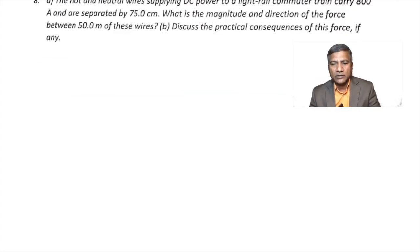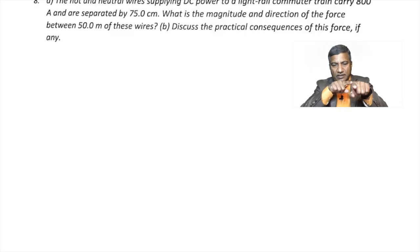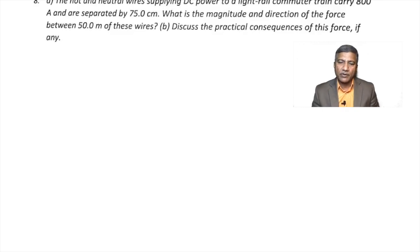Question 8: The hot and neutral wires supplying DC power to a light rail commuter train carry 800 amperes and are separated by 75 cm. What is the magnitude and direction of the force between 50 meters of these wires? Two conductors kept parallel create magnetic fields that exert forces on each other.